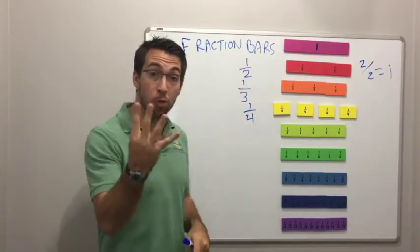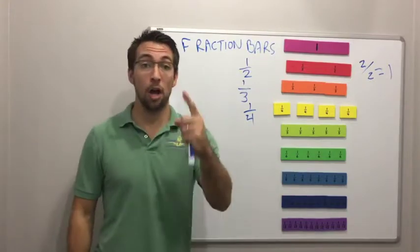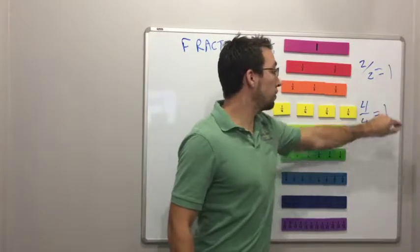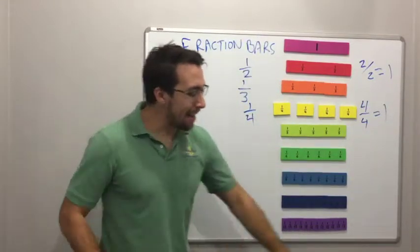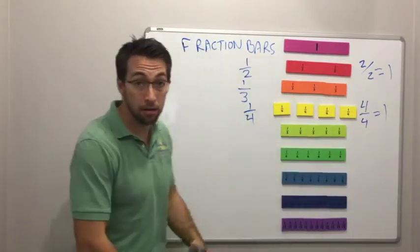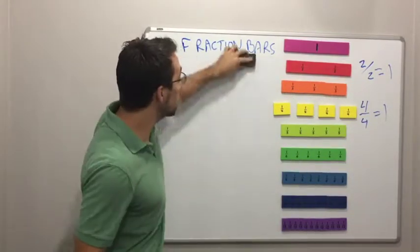Four. If you have four quarters, you have one dollar. Four out of four equals one. Anytime your numerator, the number on top matches the denominator, you have one. That equals one.